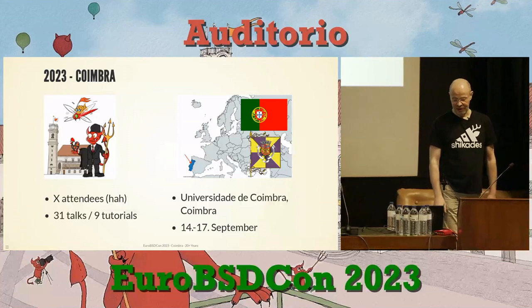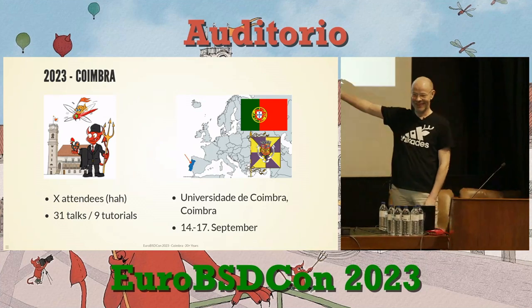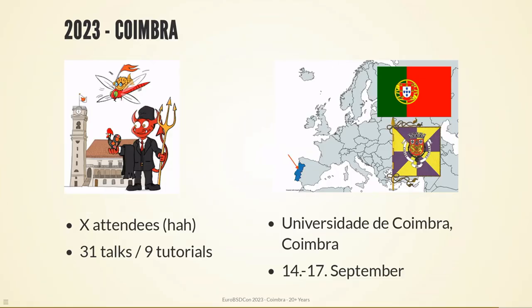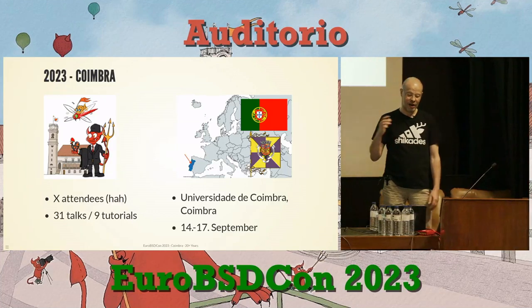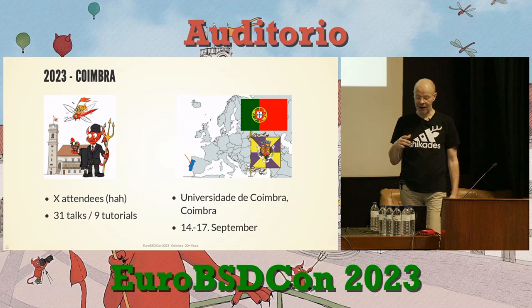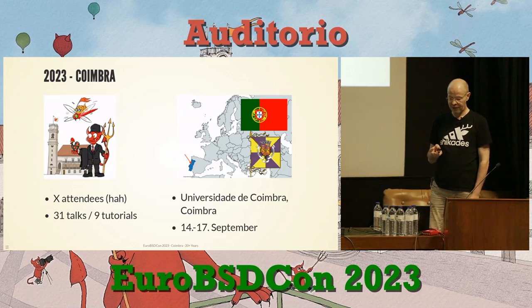This brings us to the current conference. We are in Coimbra and we are not disclosing the attendee number yet — that's for the closing session with Henning, who will also show the country distribution map. We are pretty good with talks and back to nine tutorials. It was even ten, but Roller Angel had a bike accident and couldn't come — so that's too bad, all the best to him for a speedy recovery. That concludes the conference details.